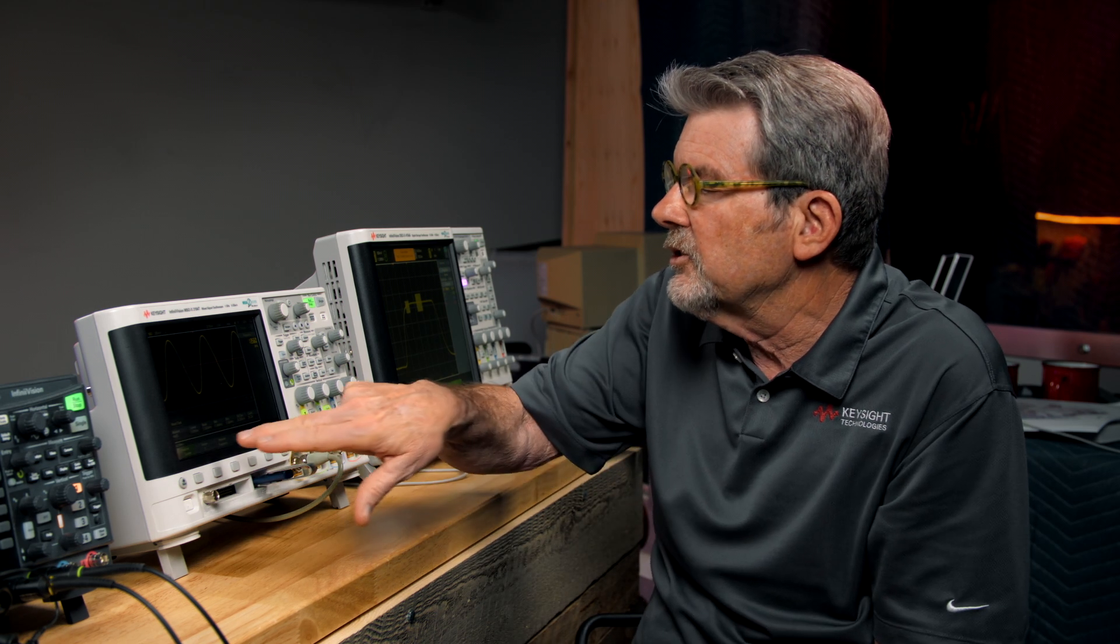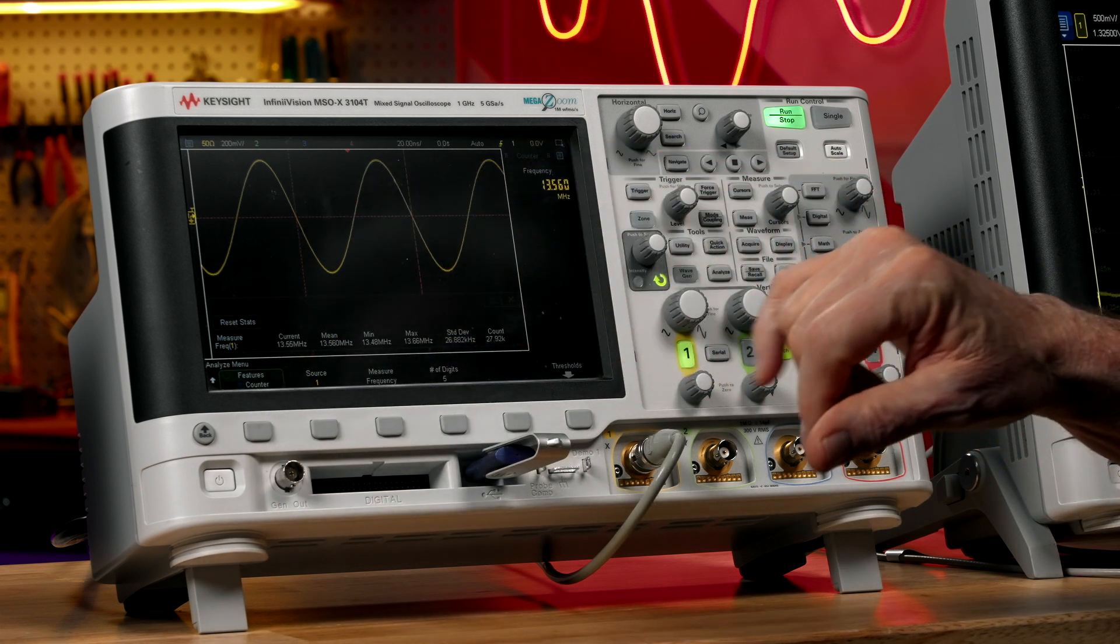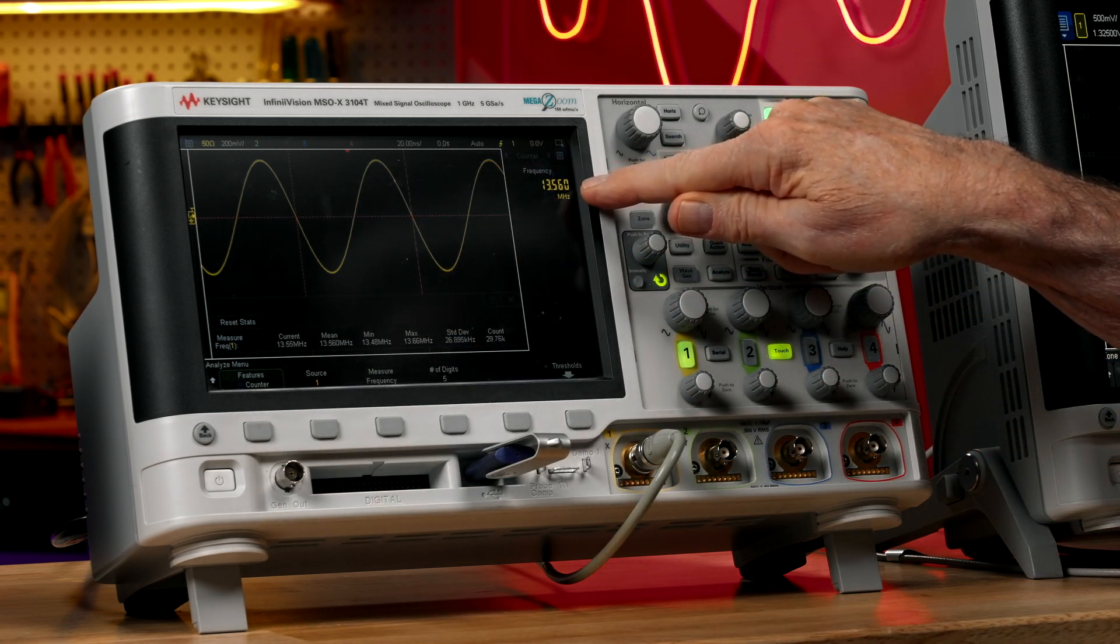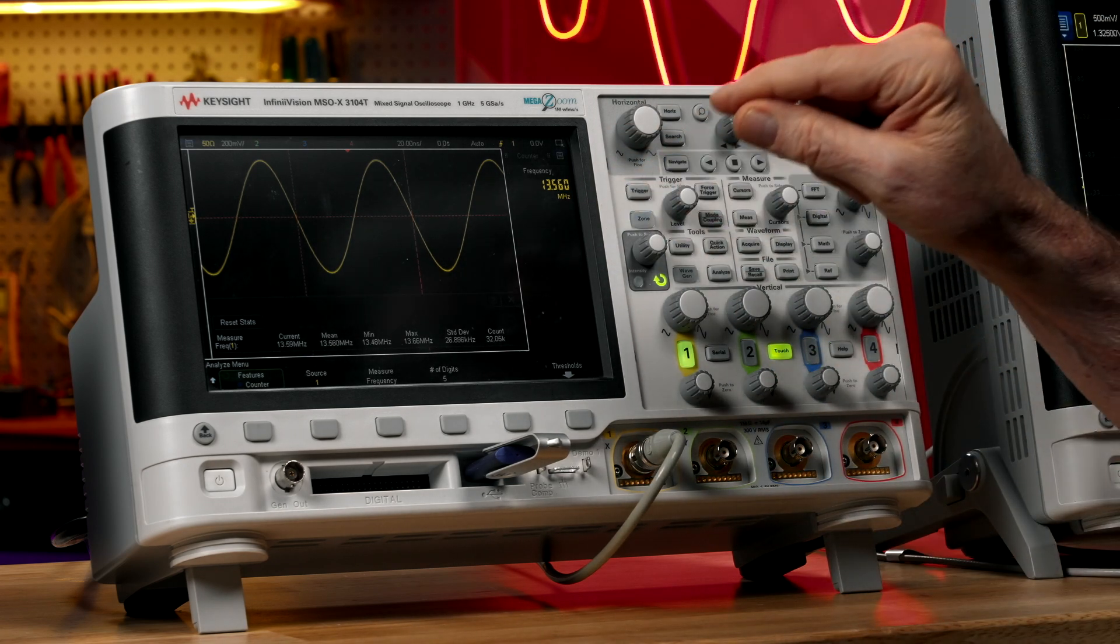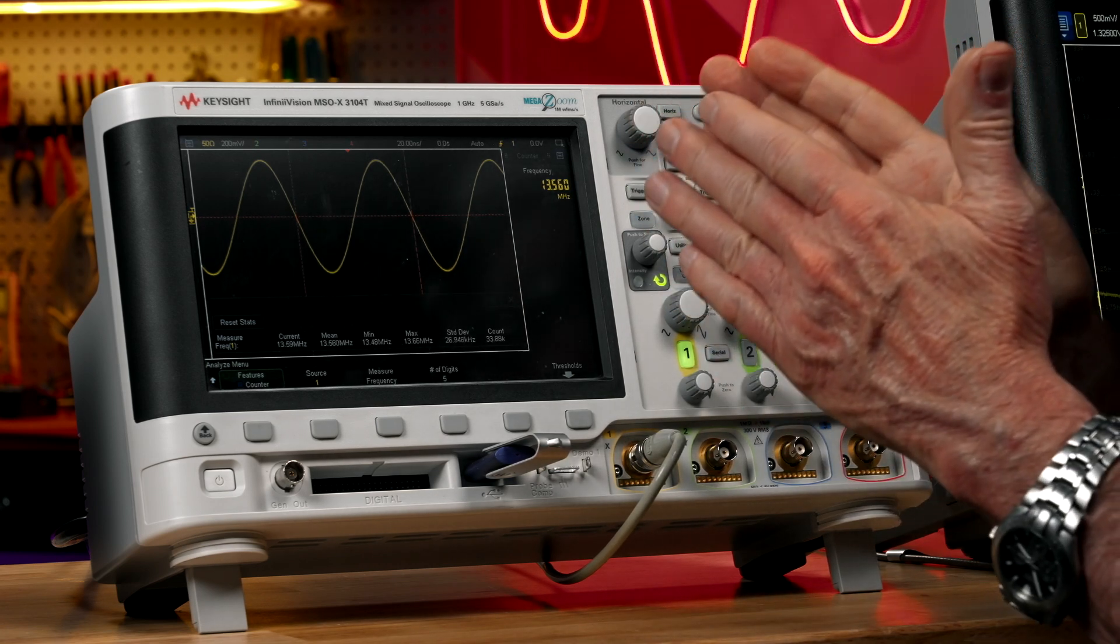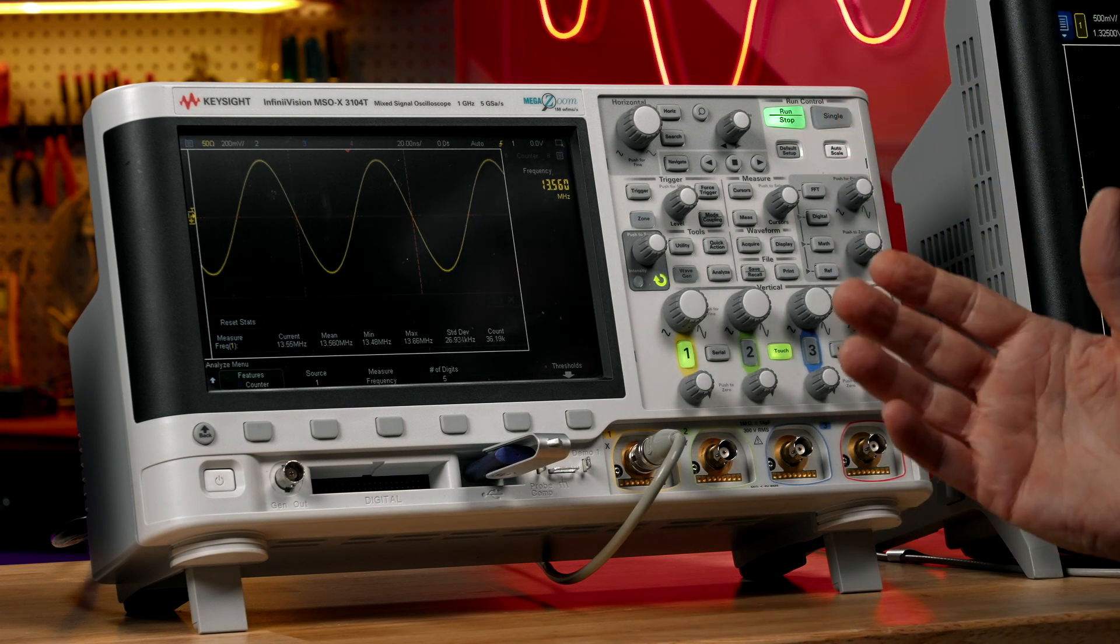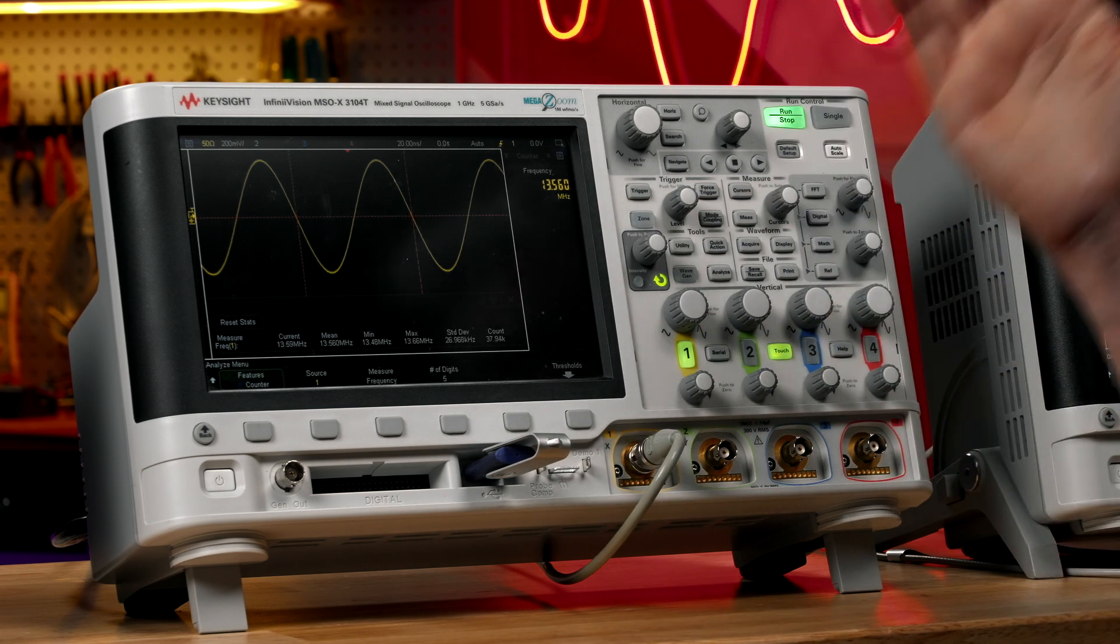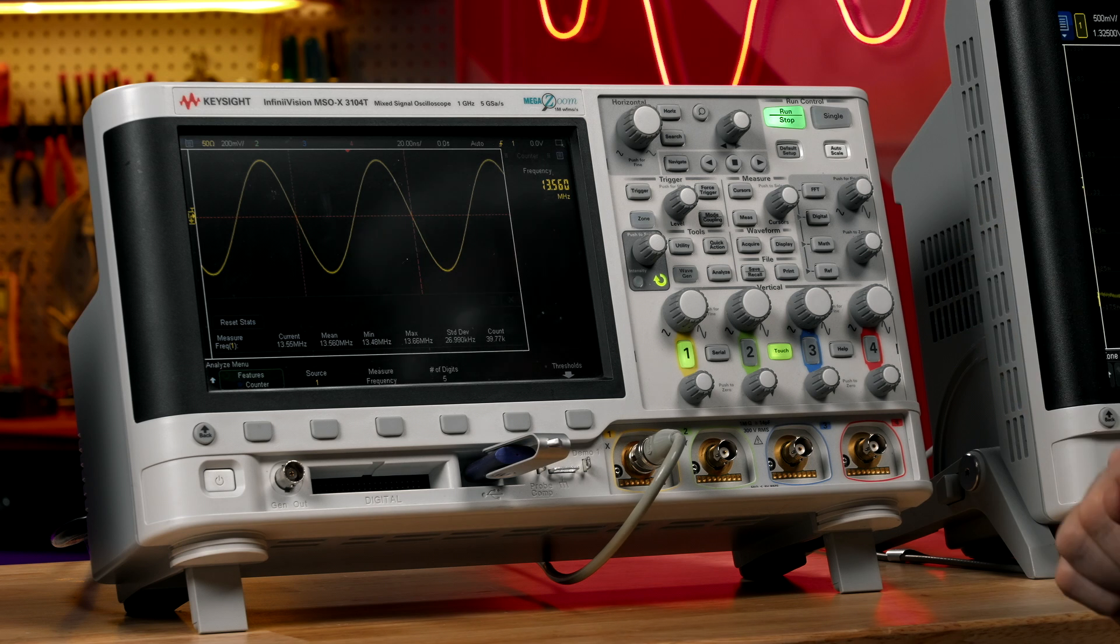So let's select, it's already selected here, a frequency measurement on channel one. And it measures 13.560 with no flipping digits. So we have five digits of very stable resolution. And what it's doing is it's capturing multiple trigger crossings. It's counting them over a gate time. In this case, with five digit resolution, it's got a gate time or it counts trigger crossings for 100 milliseconds.